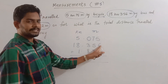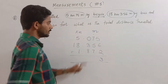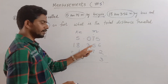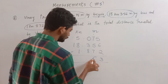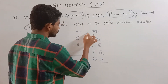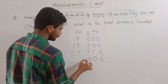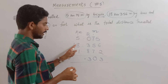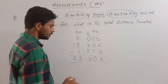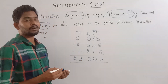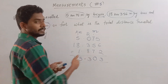Adding: 5 plus 6 is 11, plus 3 is 13 — wait, 2 is 13. 7 plus 1 is 8, plus 5 is 13, plus 7 is 20. 8 plus 2 is 10, plus 3 is 13. 8 plus 1 is 9, 10... carry 1. So total travel is 25 kilometers and 303 meters.